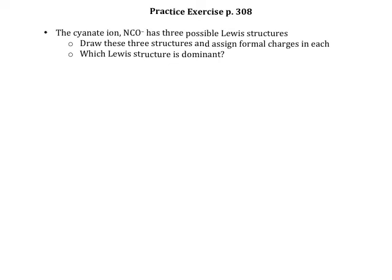This is a practice exercise on page 308 in the textbook. We're going to go through and draw three possible Lewis structures for an ion, assign formal charges to all the atoms in that ion, and then try to figure out which Lewis structure is dominant based on those formal charges.